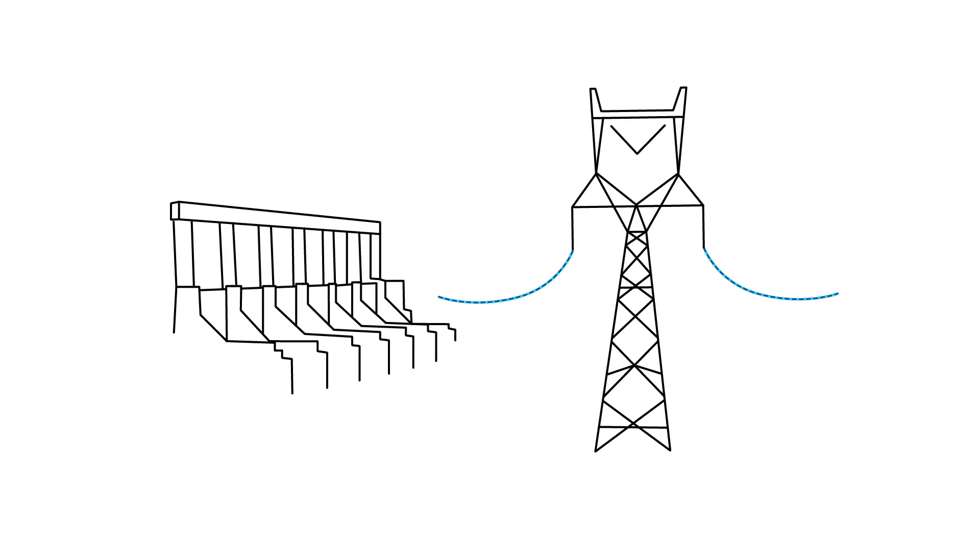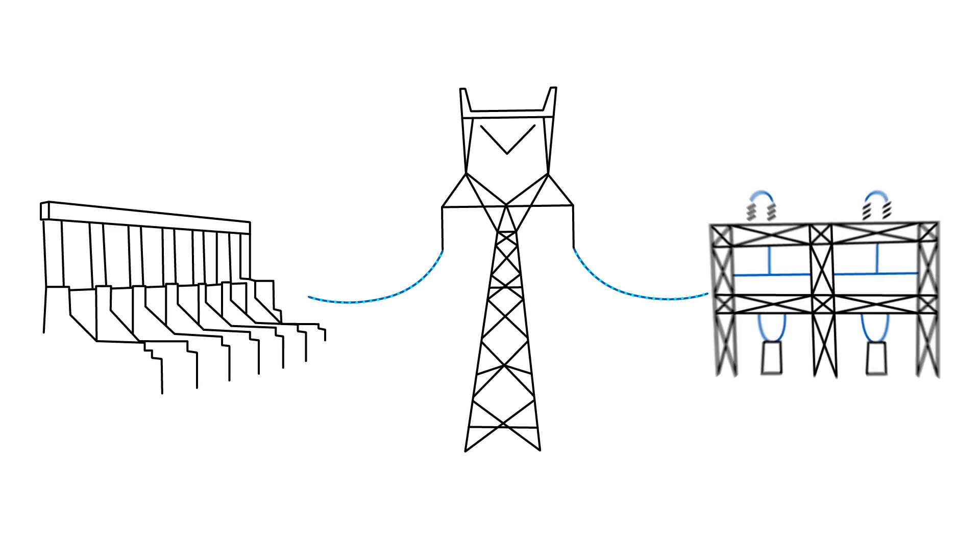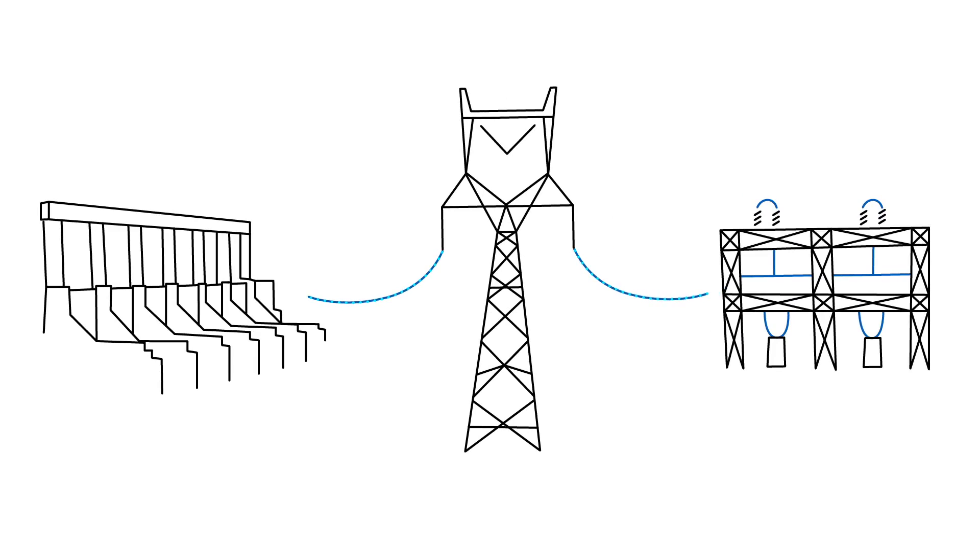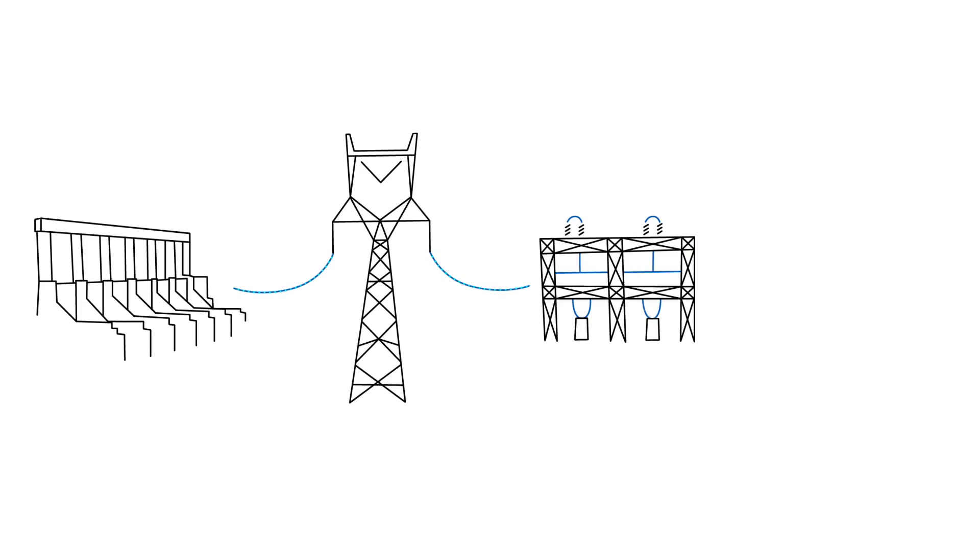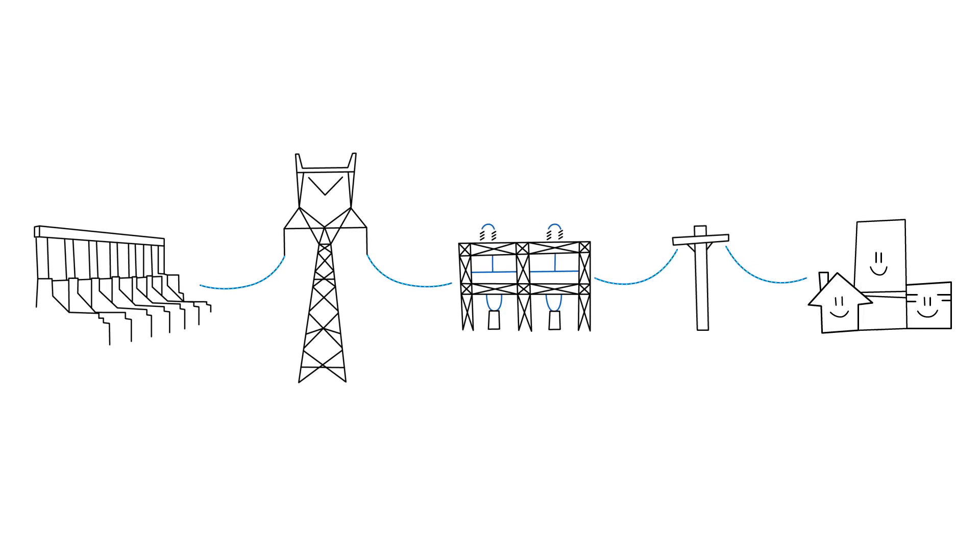Our transmission network includes more than 13,000 kilometers of wire traveling to 450 transmission stations across the province. Once the electricity arrives at a transmission station, it is fed into the distribution system and delivered right to your home and business.